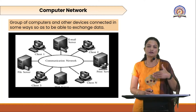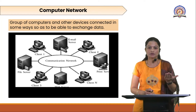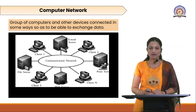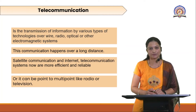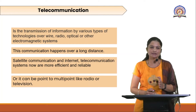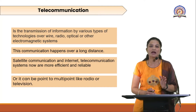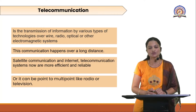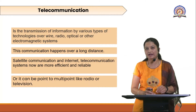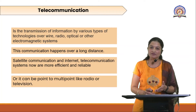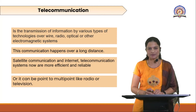Using a computer network, computers are connected with each other and we can send mails, files, images, or important documents. Similarly, we have telecommunication, which is used for transmission of information using various types of technology. That technology may be wired, radio, optical fiber, or other electromagnetic systems for communication purposes.